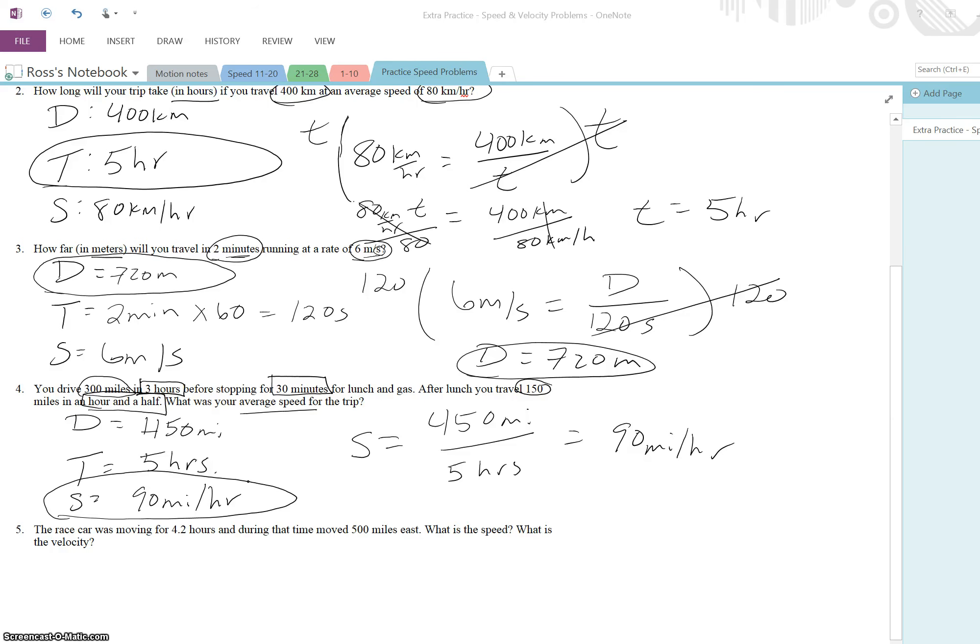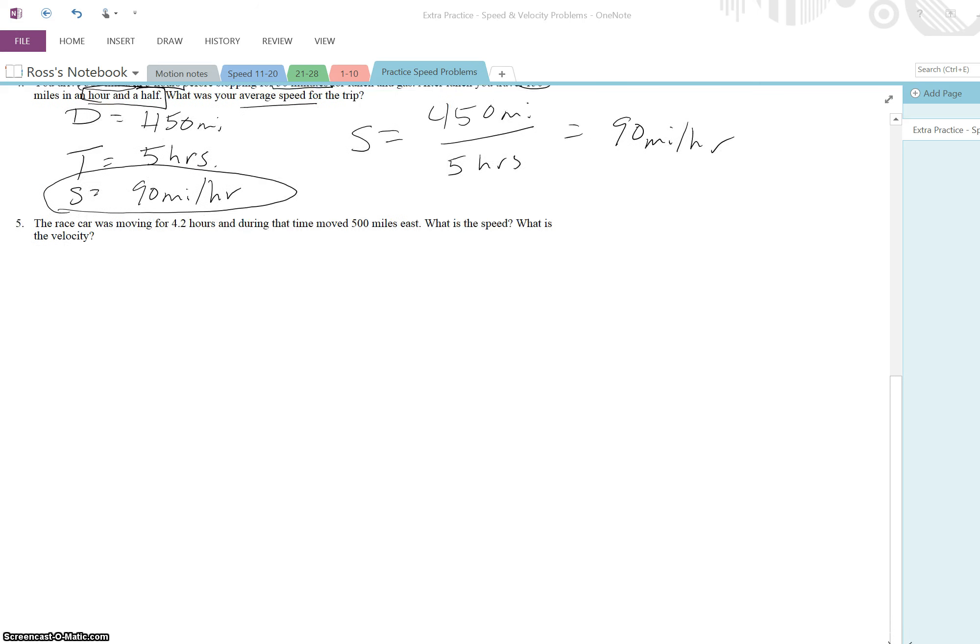Here's our last problem. The race car was moving for 4.2 hours and during that time moved 500 miles east. Underline east there. What was the speed? What is the velocity? So we all should have velocity down here. So we know that we are solving for speed and velocity. Remember, the difference between speed and velocity is that speed is just how quickly you are moving. Velocity is how quickly you are moving in a direction. So since we already know the direction is east, we can just already write that down here now so that we don't forget it.